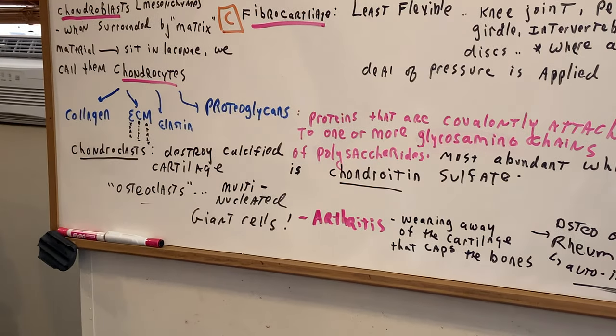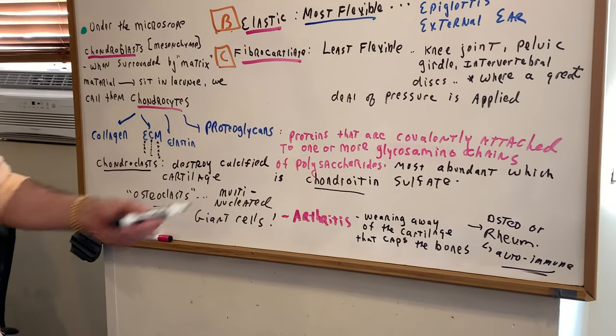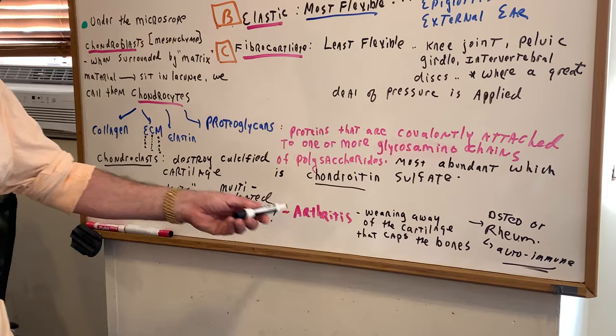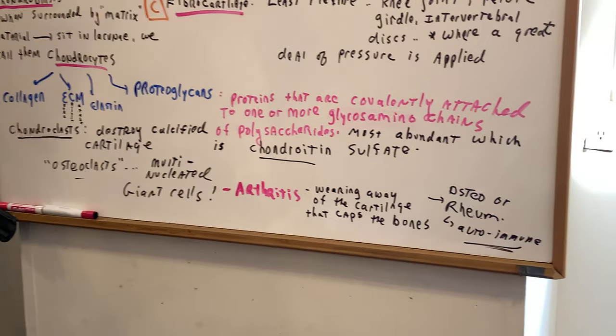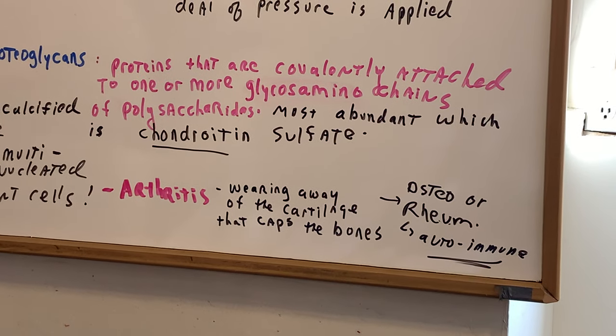The only pathologies I think I would worry about for the DAT involving cartilage is arthritis. If you remember, there's two types. There's osteo and rheumatoid. Rheumatoid being the autoimmune disease.